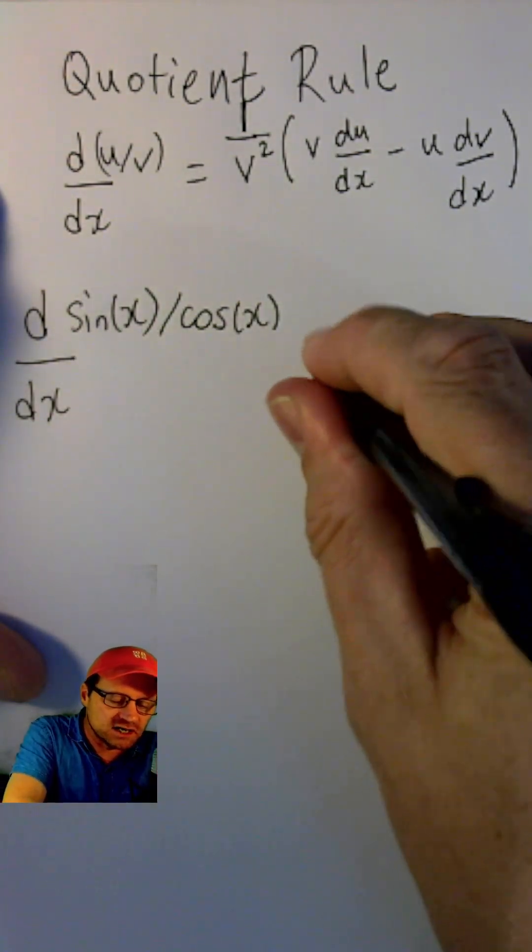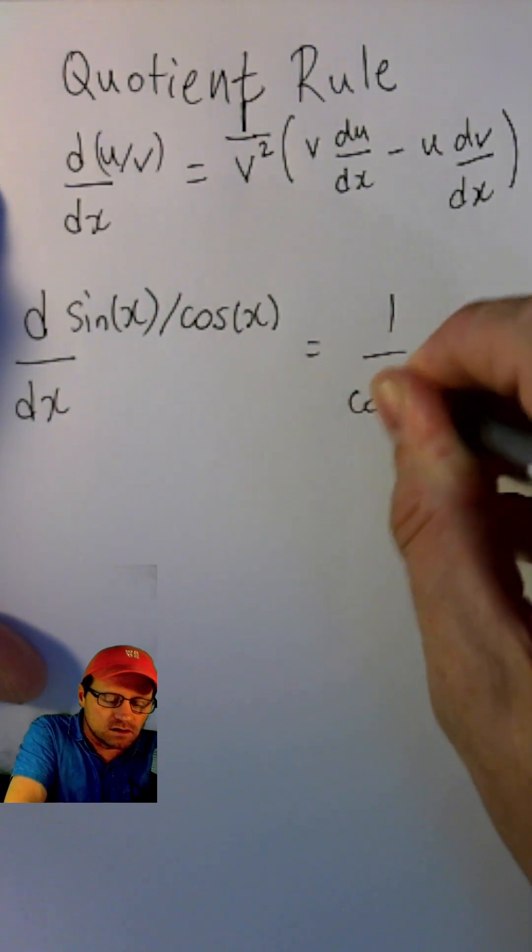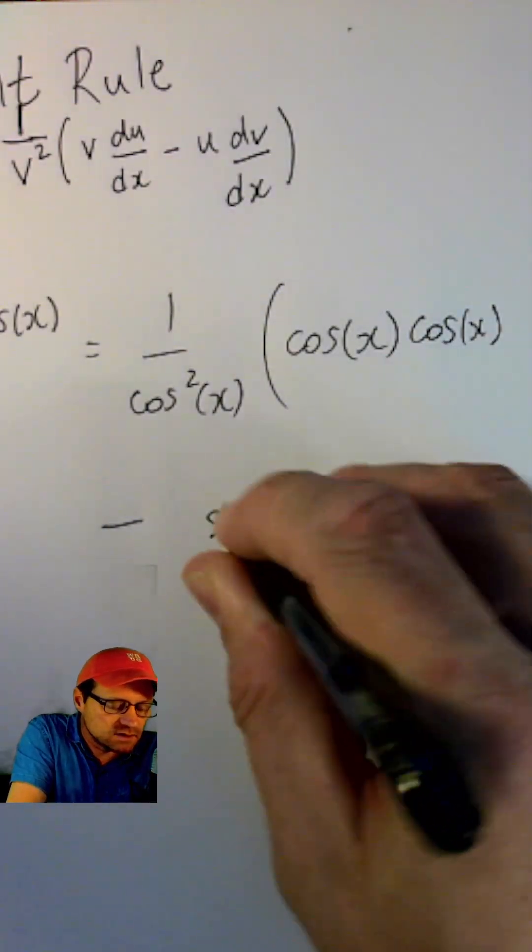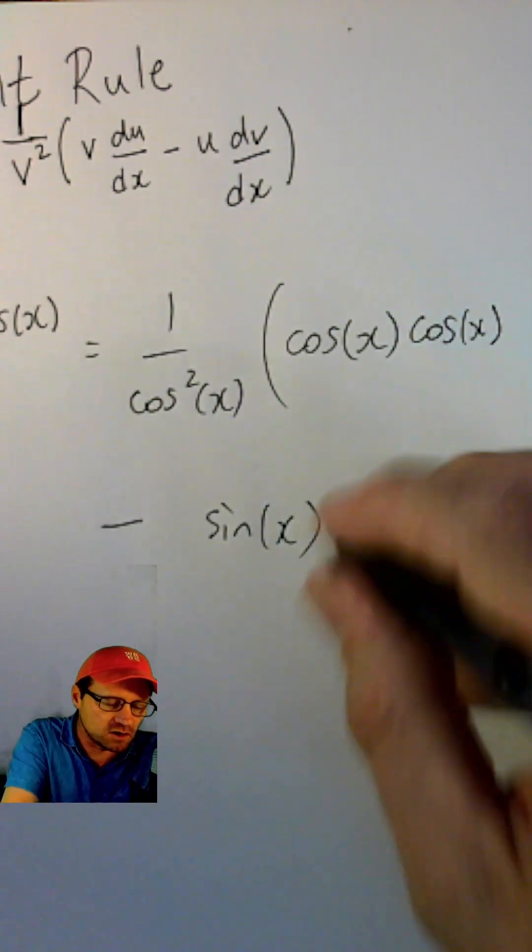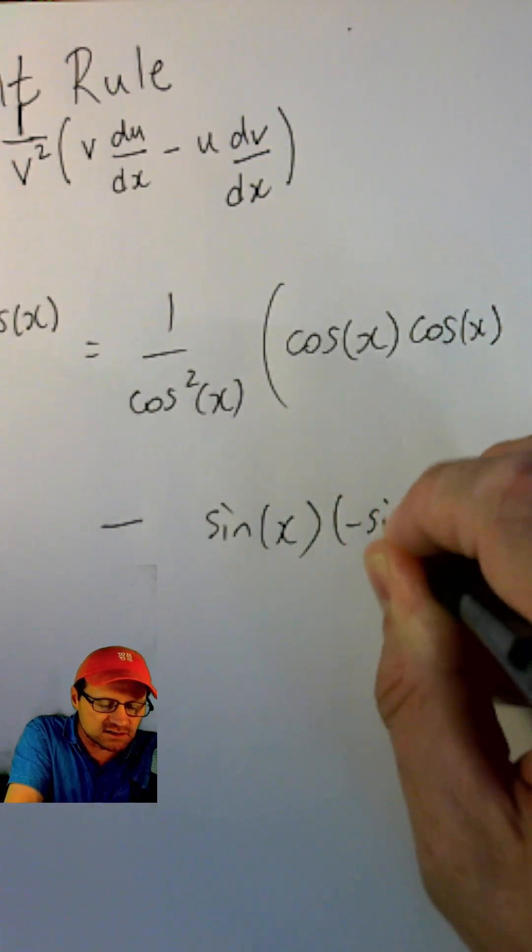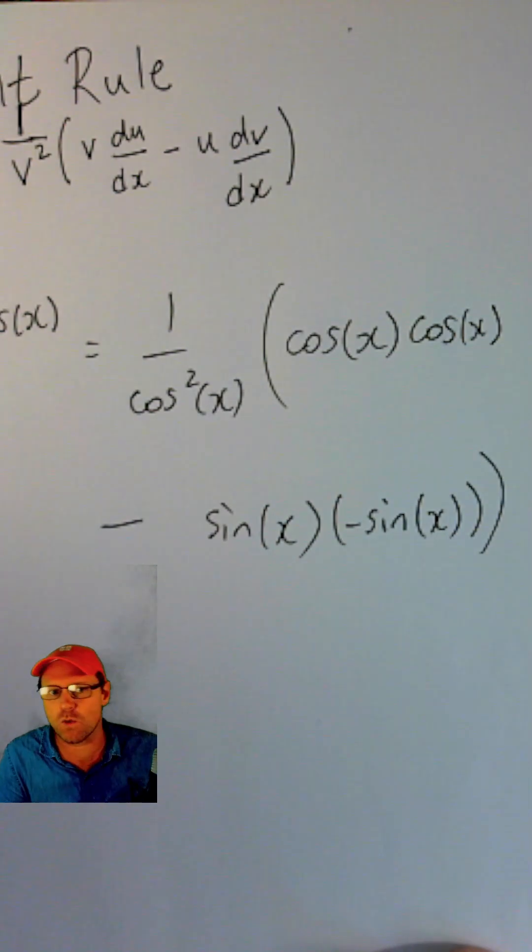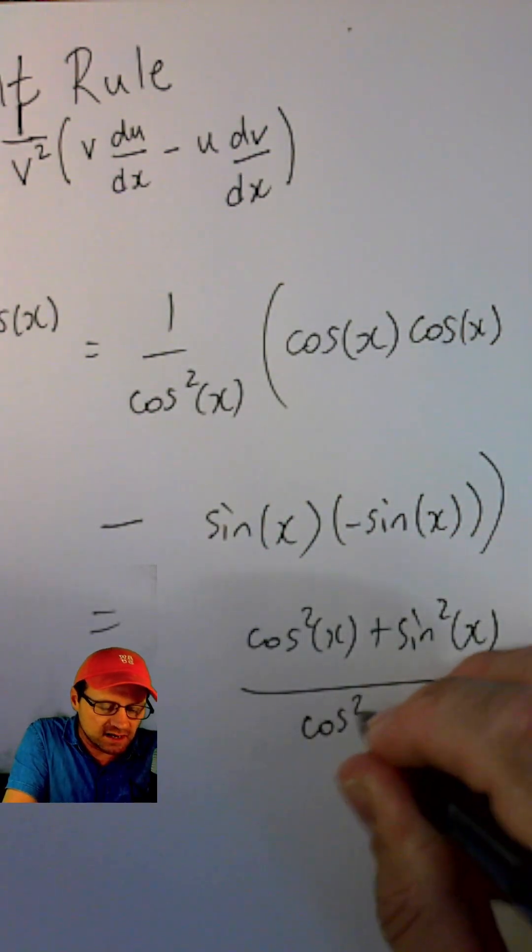sin over cos differentiated gives 1 over cos squared of x times cos x times the derivative of cos x, which is minus sin x, minus sin x times the derivative of cos x. This is all over cos squared x.